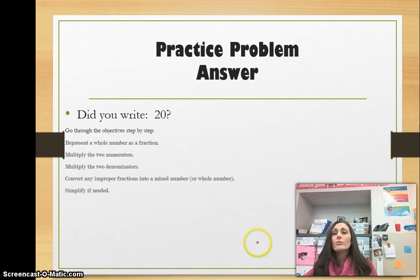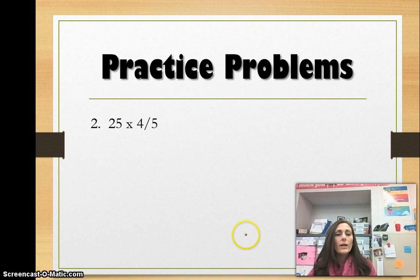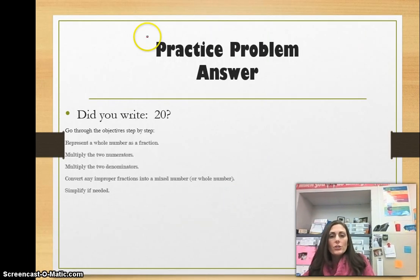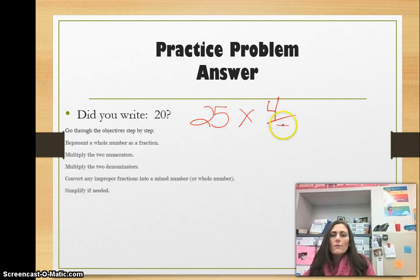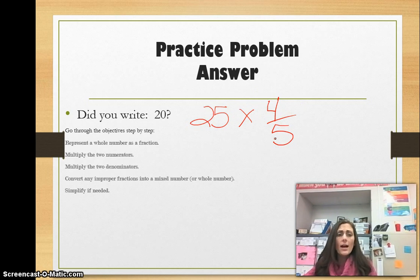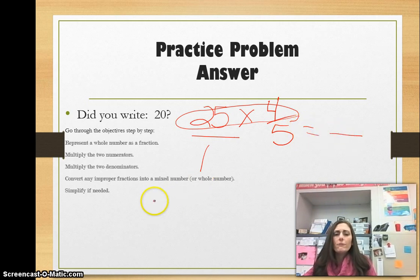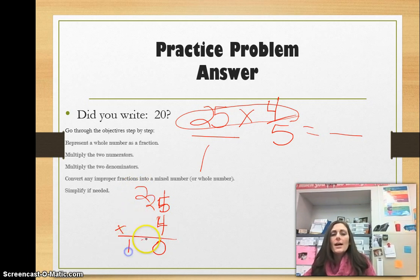Did you write 20? If so, good job. We're going to get the chance to go over it. If you remember, our problem was 25 times four-fifths. So I'm going to write down 25 times four-fifths. And I'm going to go through my steps. Represent a whole number as a fraction. So I'm going to put a one as the denominator. Multiply the two numerators. So what is 25 times four? So over here on the side, just so I can visualize it, I'm going to write it this way. Four times five is 20. Four times two is eight. Plus two is 10.